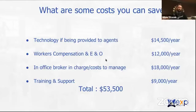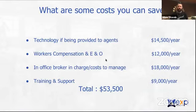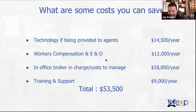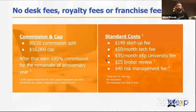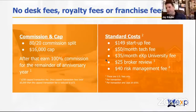That $9,000 training and support number is conservative. The people we're talking to — these top brokers and mega team leaders — are spending $15,000, $20,000, $25,000, even $30,000 a year on masterminds. We were those people. We were able to drastically reduce the cost of our masterminds to almost nothing. Most of those listening are probably spending in excess of $20,000–$25,000 on coaching, so $9,000 is conservative at best.